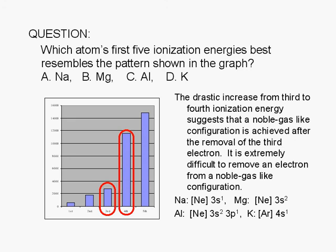So let's examine the electron configurations of the choices given. Sodium's electron configuration is neon core 3s1. For magnesium, the electron configuration is neon core 3s2. For aluminum, the electron configuration is neon core 3s2, 3p1. And for potassium, the electron configuration is argon core 4s1.